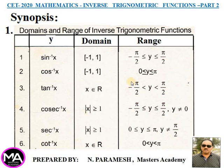Fourth: y = cosec⁻¹x. Domain: |x| ≥ 1. Range: open interval (−π/2, +π/2), except y ≠ 0.